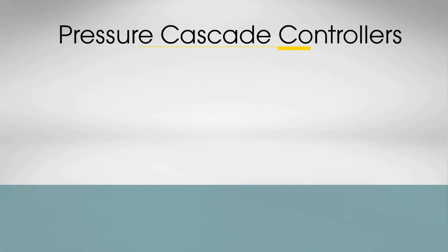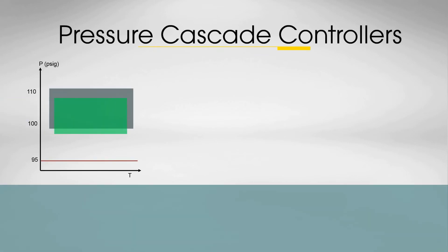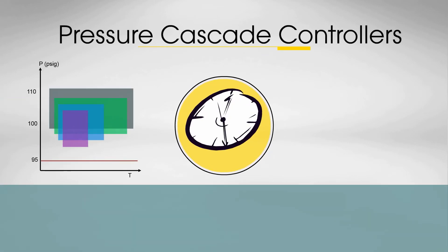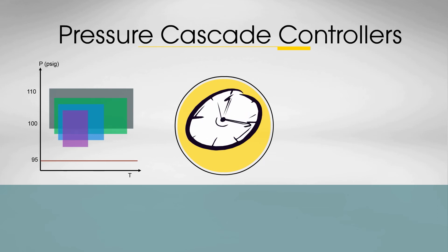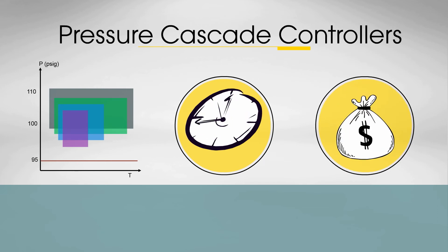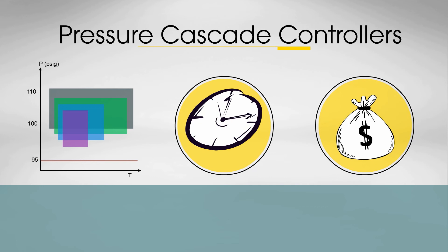Most master controllers are pressure cascade controllers that use timer-based sequencing to control the compressors. Other master controllers may look at demand and choose compressors to meet it, but they don't necessarily consider energy efficiency when selecting units.